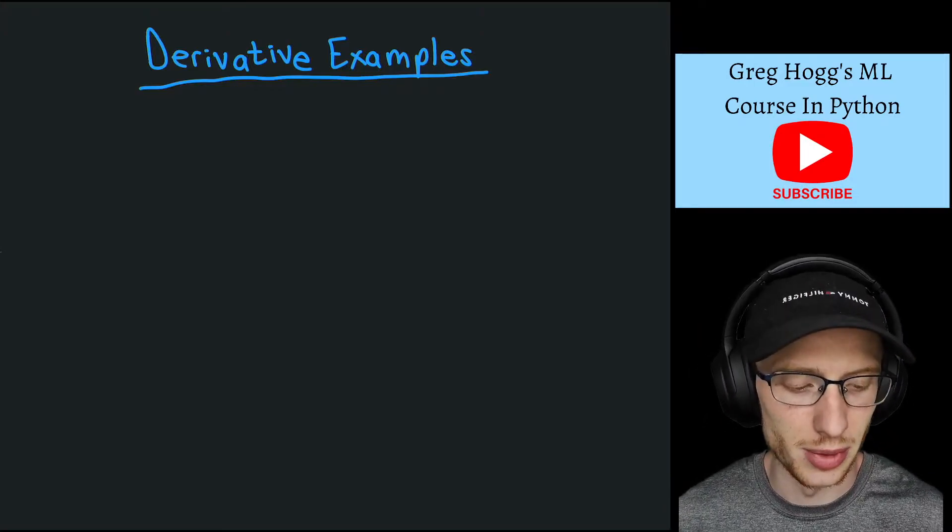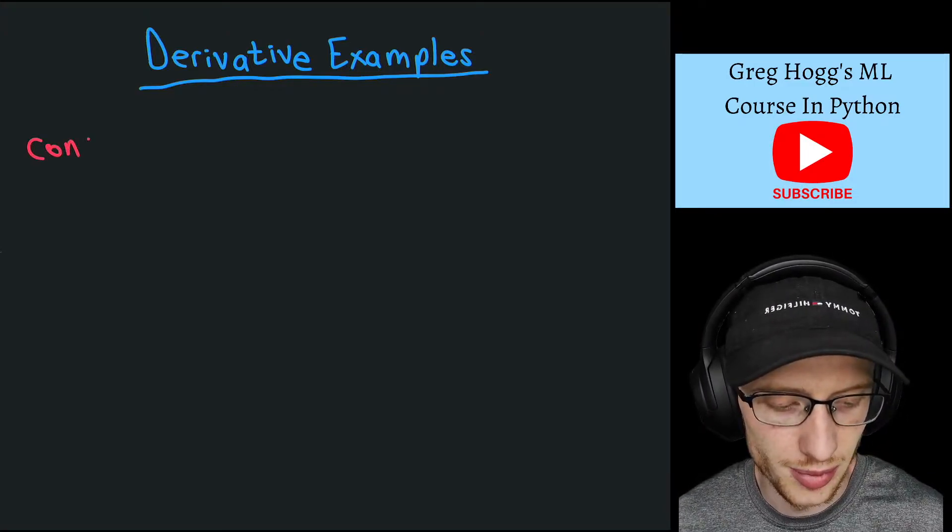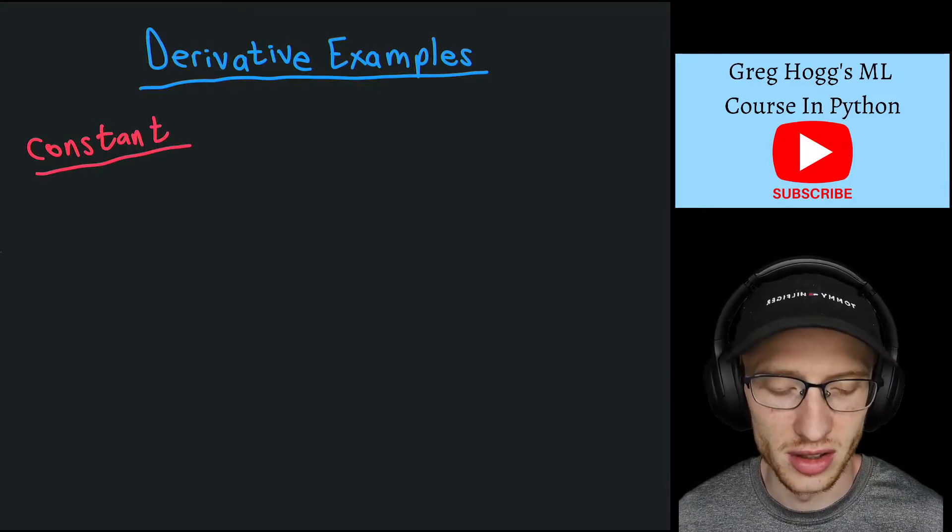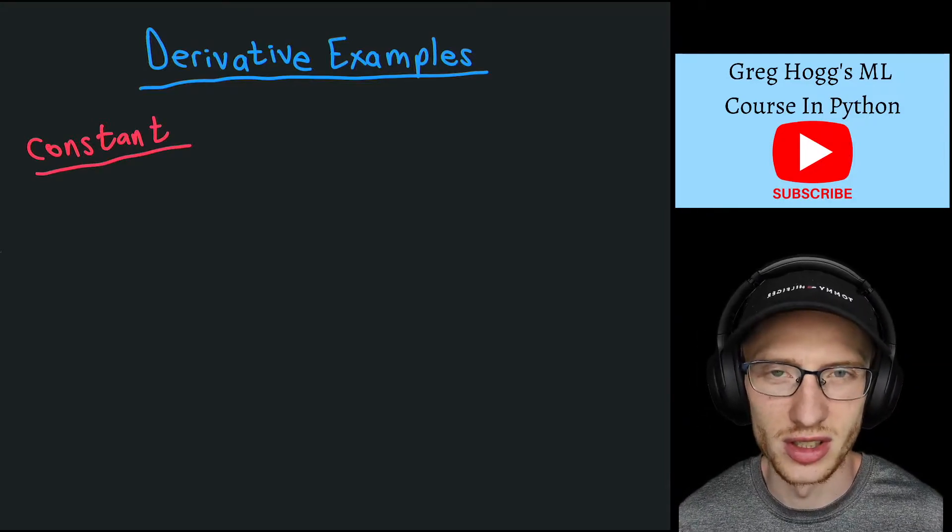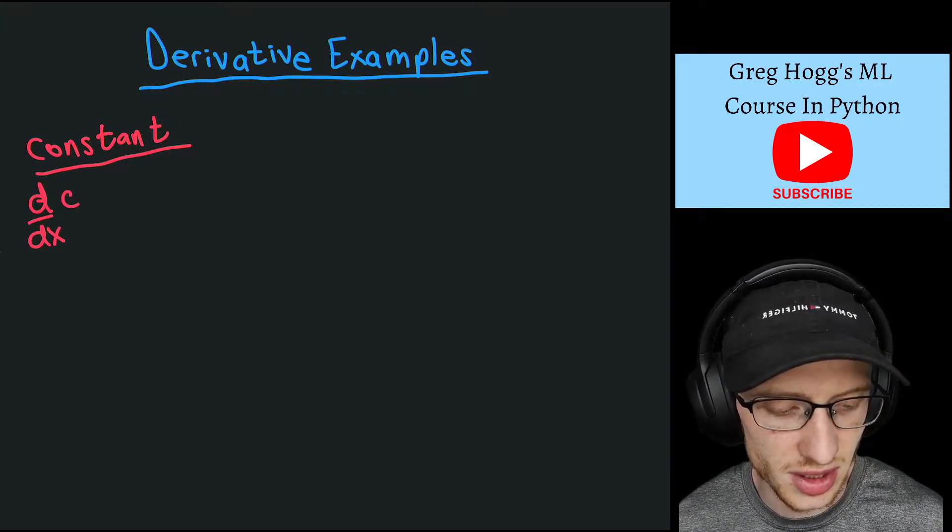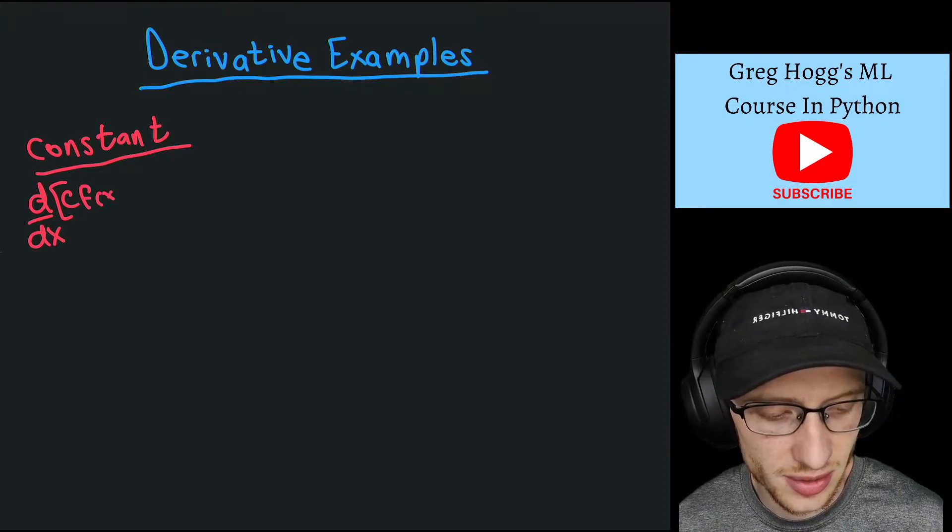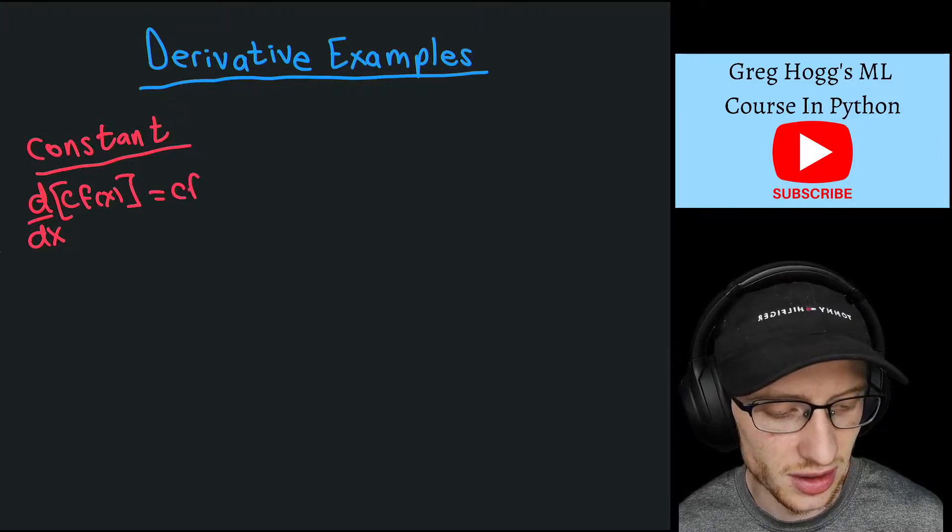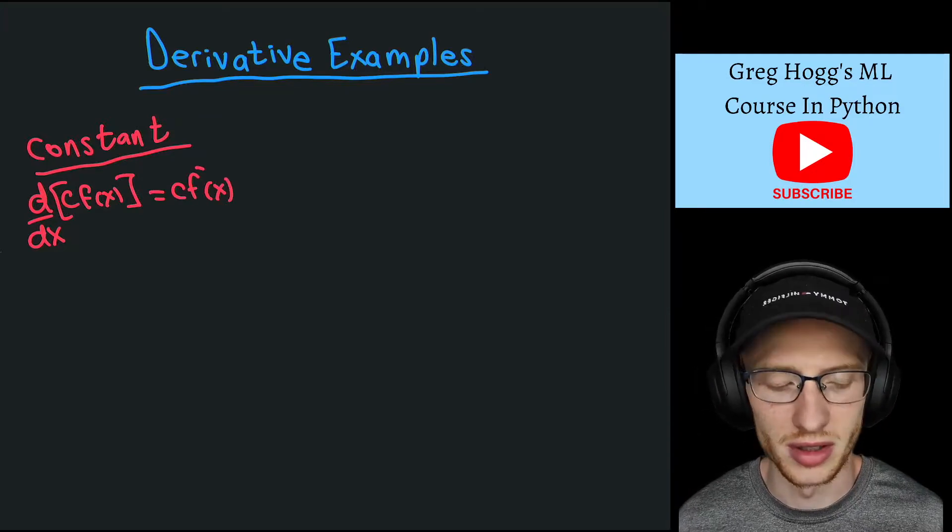Let me get used to it a little bit. So we learned the constant rule, and that just said that if you had a function f of x times c, where c is some number, then the derivative d/dx of c times f(x), well that's just simply, you can take c out and then take the derivative of f with respect to x.